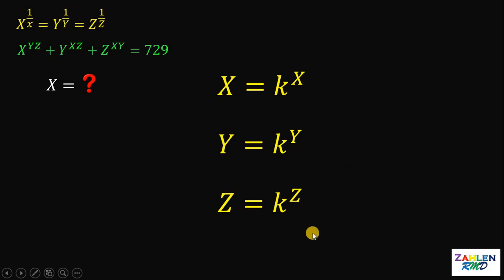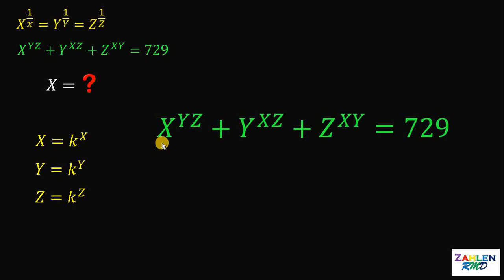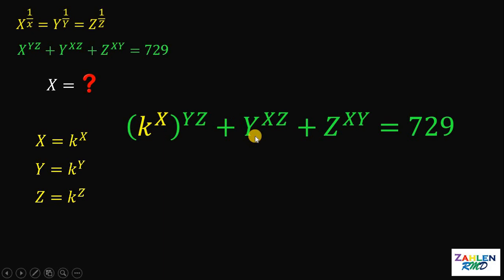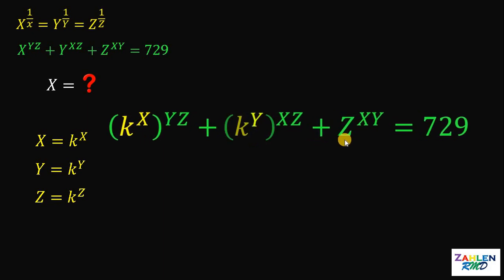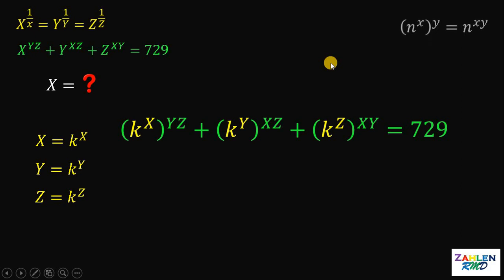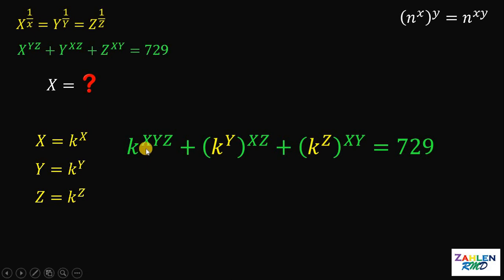Now let's set aside that result and take the second given equation: x raised to yz plus y raised to xz plus z raised to xy equals 729. Take note that x is equivalent to k raised to x, so we replace x with k raised to x. Similarly, y is replaced by k raised to y, and z is replaced by k raised to z. Recalling the law of exponents — n raised to x, raised to the power of y, equals n raised to xy — the first term, k raised to x raised to yz, can be written as k raised to the product xyz.